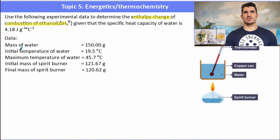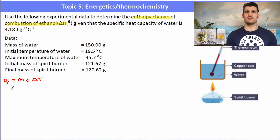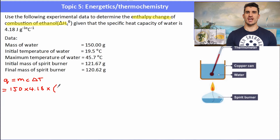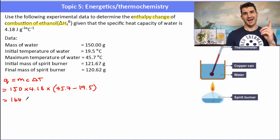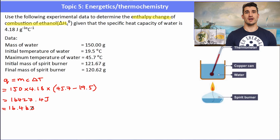A second example: ΔH of combustion of ethanol. We're given a bunch of information and need to determine the ΔH of combustion. First, work out the energy absorbed by the water: 150 grams of water absorbed heat from the burning fuel. Using q = mcΔT: 150 × 4.18 × temperature change. The temperature went up, indicating an exothermic reaction. Converting to kilojoules gives 16.4 kJ of energy released.